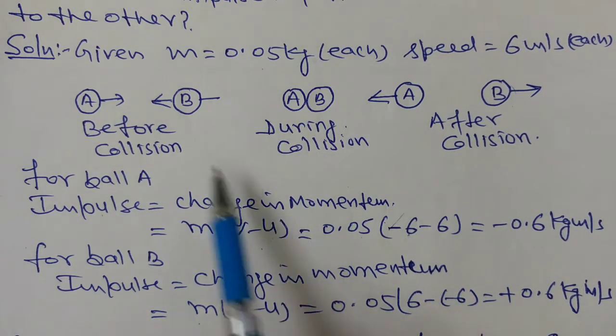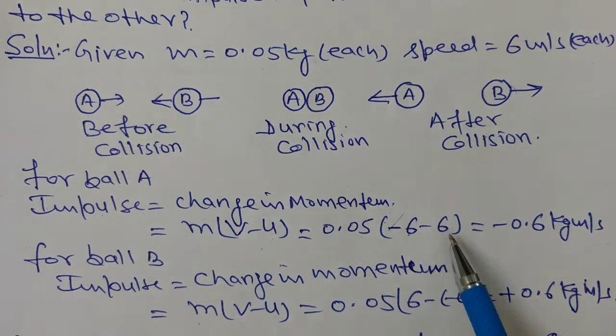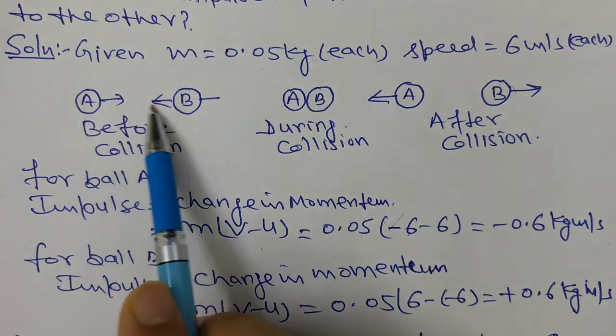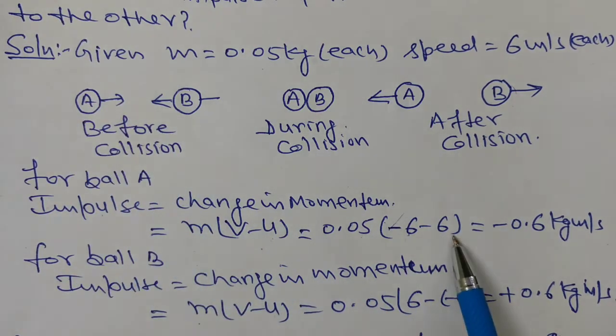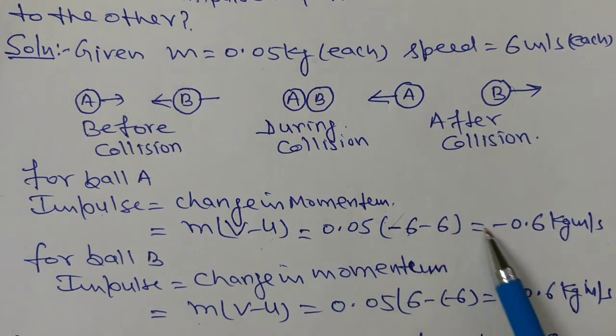This is initial velocity of ball A before the collision, along positive x-axis, therefore this is plus 6. This is minus 12 into 0.05, so this equals minus 0.6 kg m per second.